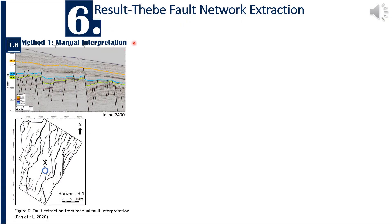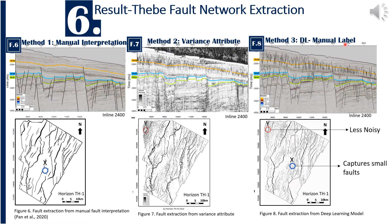This is the result from Seabees, showing fault prediction from manual interpretation, variance attribute, and the method trained with manual labels. The manual interpretation by Phan et al., which took three weeks, has clear fault predictions capturing only the major faults. The variance attribute extraction recognizes both polygonal and deeper faults, but the fault shapes are not distinct and contain a lot of noise. The deep learning method generates the best fault prediction, recognizing small faults in addition to large ones, with distinct shapes, and removes noise. The deep learning fault prediction is used in later area comparison.